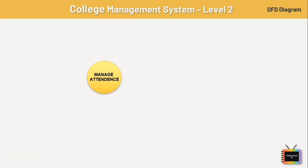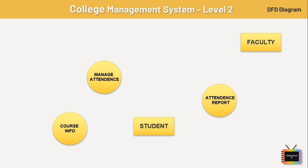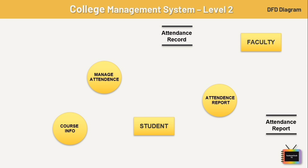Here we have three processes: manage attendance, which allows faculty to record attendance for students; attendance report, which generates the attendance report; and course info, which deals with managing courses offered by the college. There are two external entities: student and faculty. The student entity interacts with the system by providing their information and viewing the attendance report. The faculty entity interacts with the system by accessing and updating attendance records. We also have three databases: attendance record, attendance report, and course info.